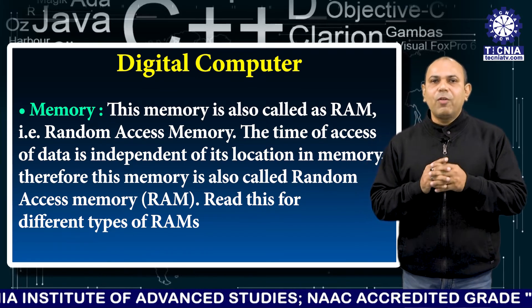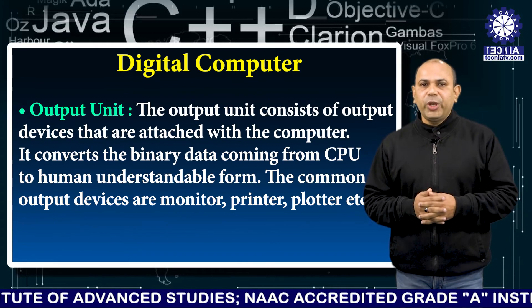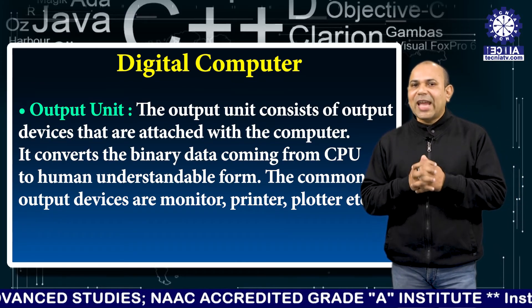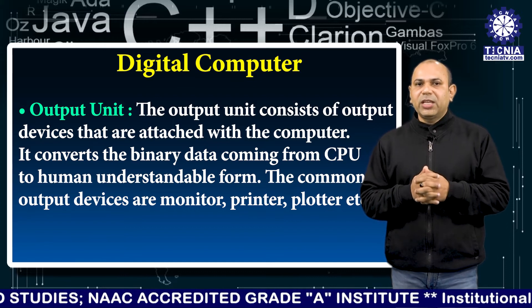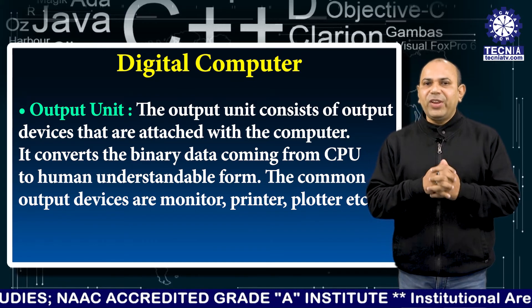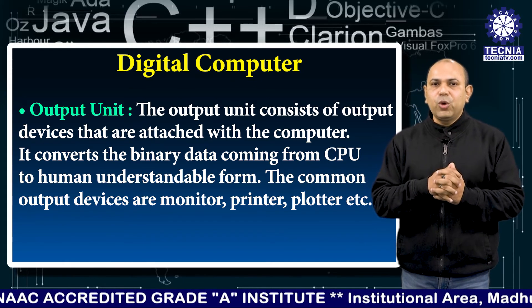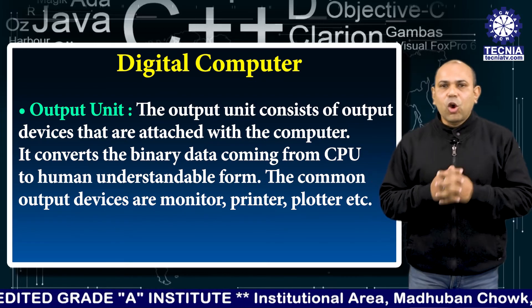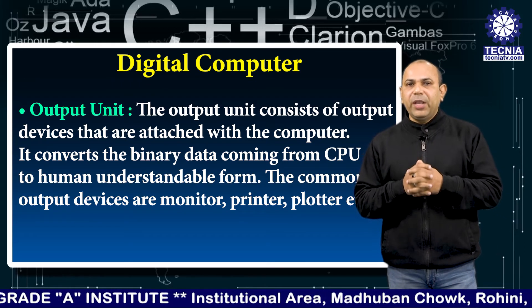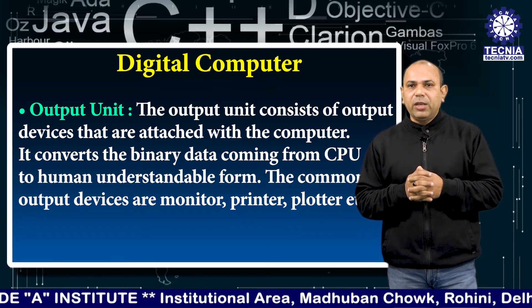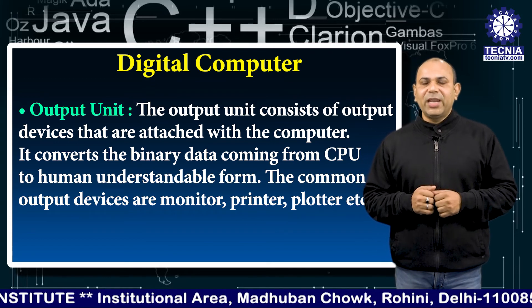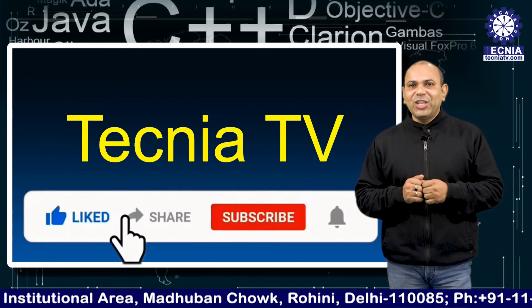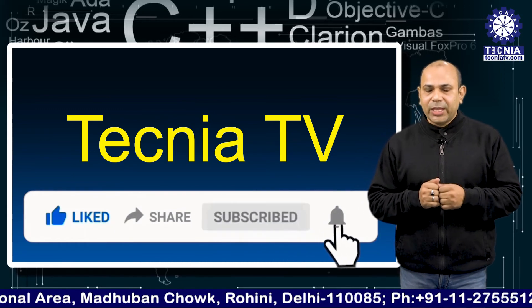The output unit consists of output devices that are attached to the computer. It converts binary data coming from the CPU into human-understandable form. Common output devices are monitor, printer, plotter, etc. Hope you understood the topic of digital computer. Please like, share, and subscribe to Technia TV. Thank you.